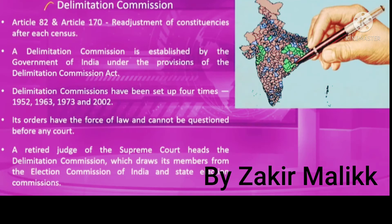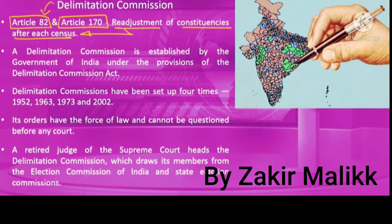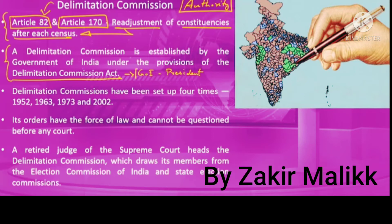Delimitation draws its legal and constitutional basis from Article 82 and Article 170 of the Constitution, which provides for readjustment of constituencies periodically based on population data of each census, to be carried out by an authority established by parliament. Accordingly, parliament enacts the Delimitation Commission Act, under which the government of India through the President is empowered to establish delimitation commissions.